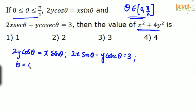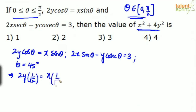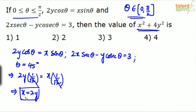With θ = 45°, the first equation gives 2y × (1/√2) = x × (1/√2). The (1/√2) terms cancel, so we get x = 2y. This is our first equation.